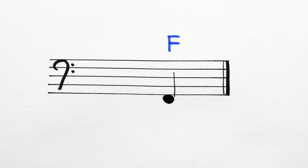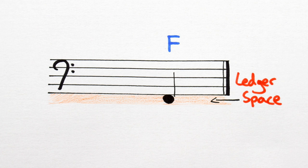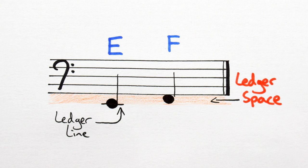F is written in the first ledger space below the bass stave, just touching the first line, not overlapping it. And E is written below F on the first ledger line.